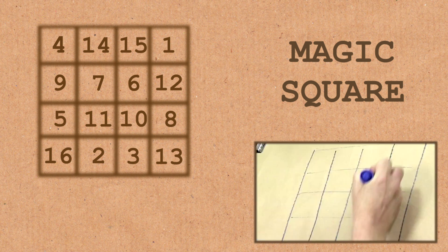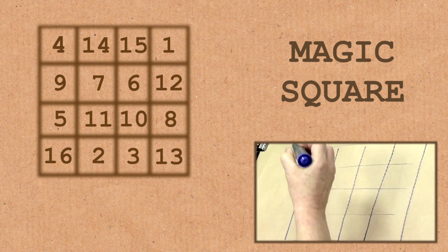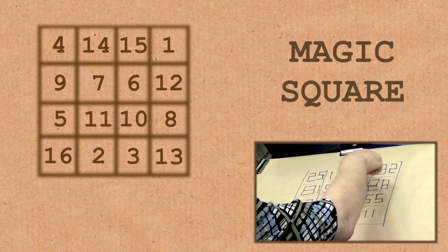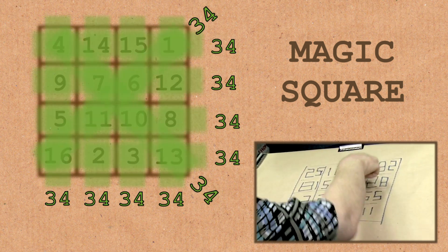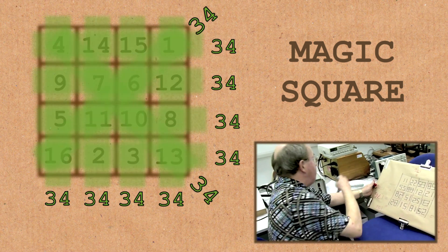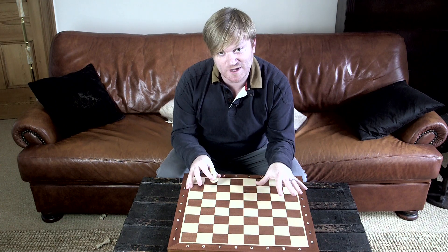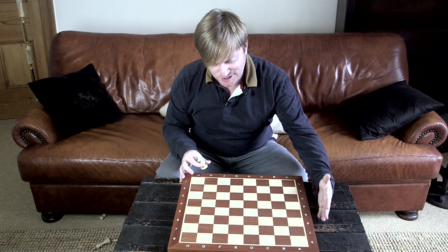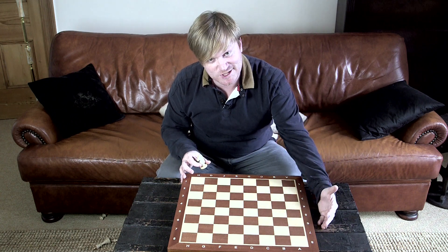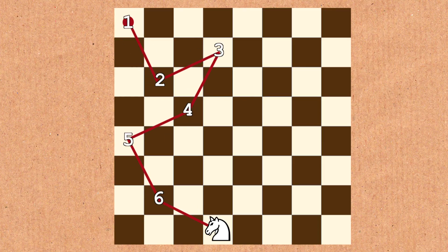Now you might recall from previous Numberphile videos, something called a magic square. Little boxes like this, where each row, column, and diagonal add up to the same number. So can we perform a knight's tour where those move numbers create a magic square here on an 8x8 chessboard? Well, have a look at this one.